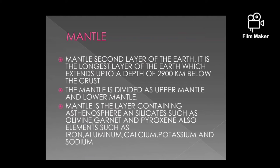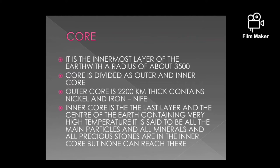The mantle also contains elements such as iron, aluminum, calcium, potassium, and sodium. Core. The core is the innermost layer of the earth with a radius of about 3,500 kilometers. It is divided into the outer core and inner core. The outer core is 2,200 kilometers thick and contains nickel and iron — known as NiFe. The inner core is the last layer and center of the earth, containing very high temperature. It is said that all the main particles and minerals are found in this layer, but no one can reach there.